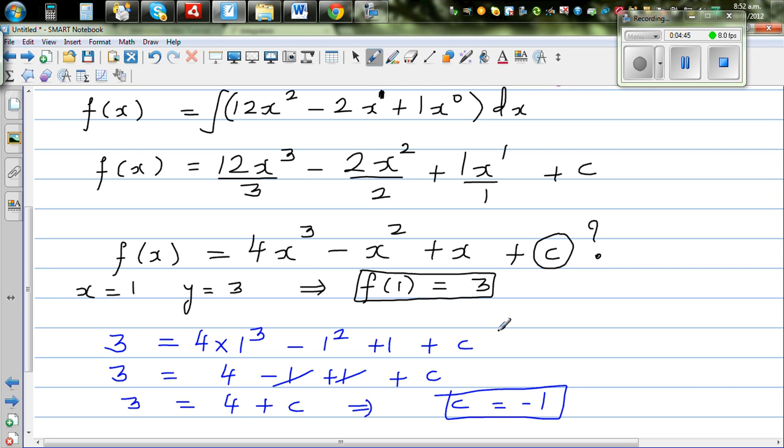So your function f(x). So I'll write the answer here. So f(x) = 4x³ - x² + x - 1.